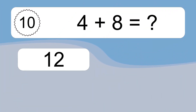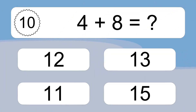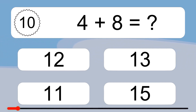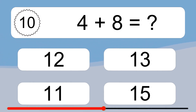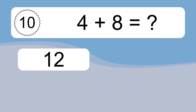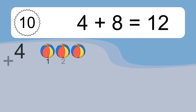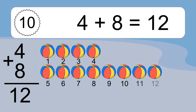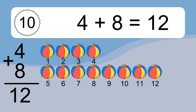4 plus 8 equals what? 4 plus 8 equals 12. Let's count it. 1, 2, 3, 4, 5, 6, 7, 8, 9, 10, 11, 12.